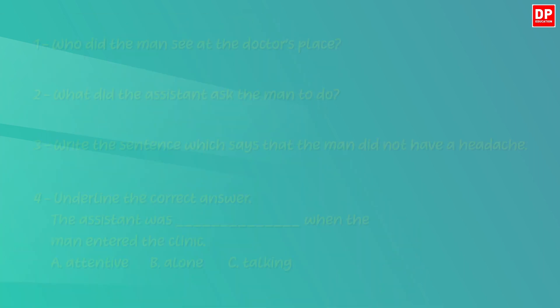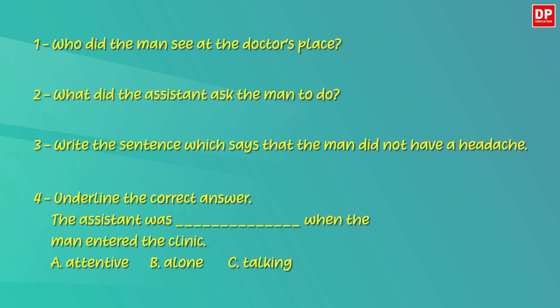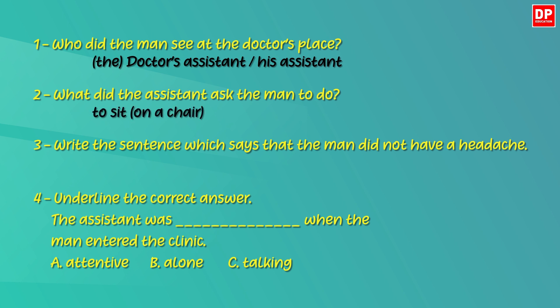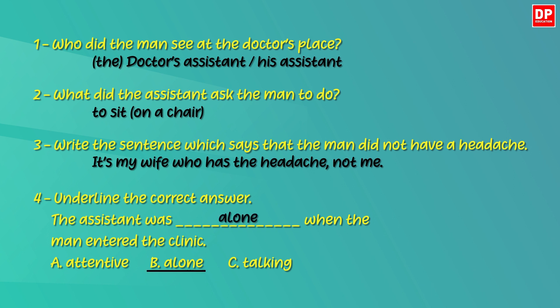Let's check your answers now. Let's start with the first question. What about the second question — what did the assistant ask the man to do? He asked the man to sit. Now the third one. Here you have to pick a sentence from the passage and write. Which sentence did you write? You have to write: 'It's my wife who has the headache, not me.' You won't get marks if you write a part of the sentence — you need to write the complete sentence. Now the last question — I'm sure you could find the answer very easily. Yes, the answer is B. Alone.